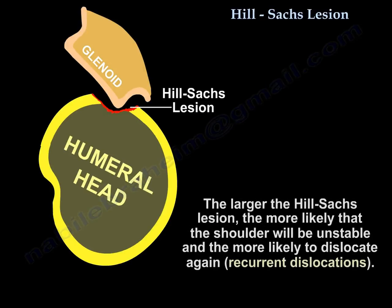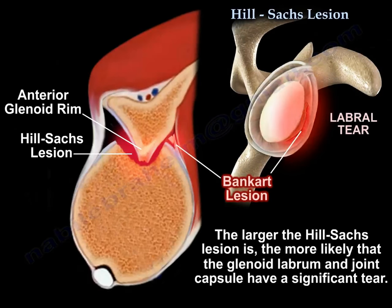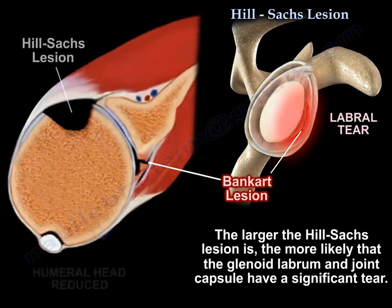The larger the Hill-Sachs lesion, the more likely the shoulder will be unstable, the more likely that shoulder will dislocate again and become a recurrent dislocation. The larger the Hill-Sachs lesion, the more likely the glenoid labrum and the joint capsule have a significant tear.